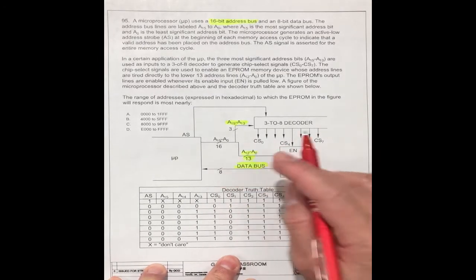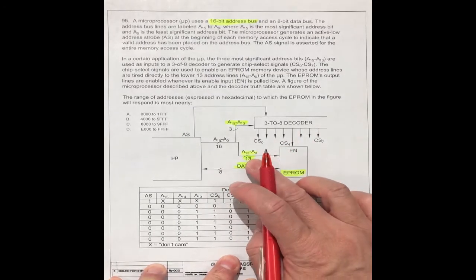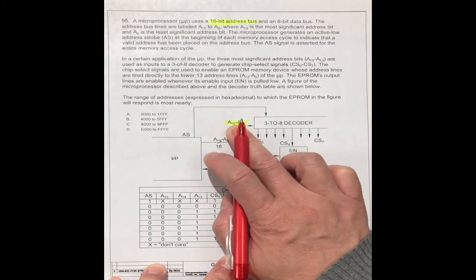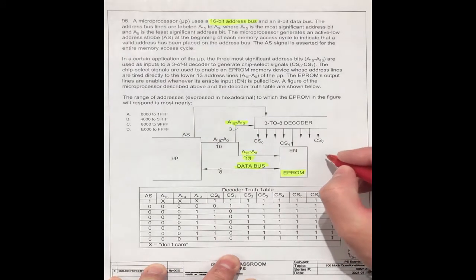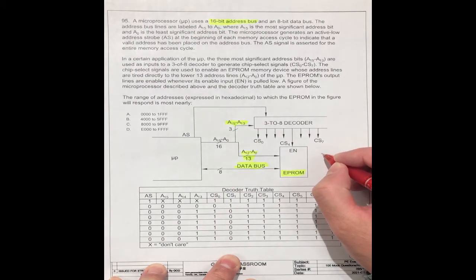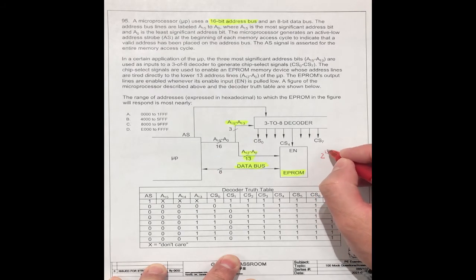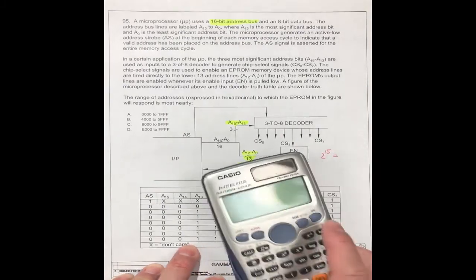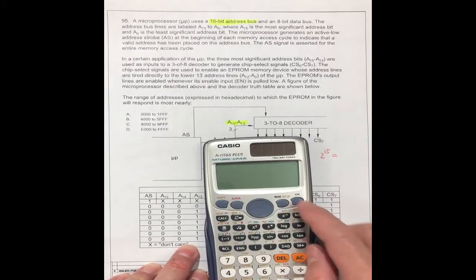For the address, we have 13 bits plus 3 bits, giving a total of 16 bits. This means the highest bit position is bit 15, so the maximum address value is 2 to the power of 15.